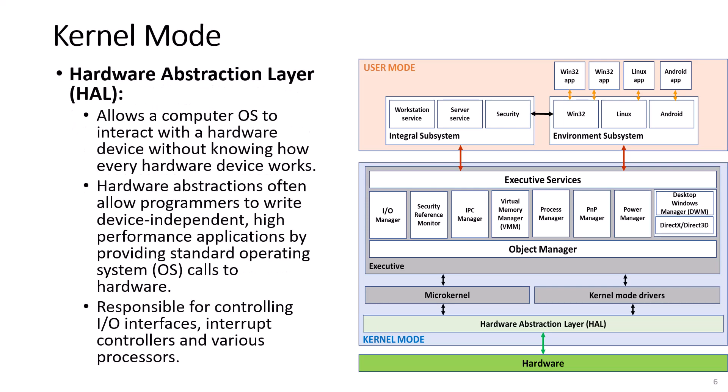Hardware Abstraction Layer, or HAL, allows the computer OS to interact with the hardware device without knowing how every hardware device works. Hardware abstractions often allow programmers to write device-independent, high-performance applications by providing standard OS calls to the hardware. HAL is responsible for controlling IO interfaces, interrupt controllers, and various processors.